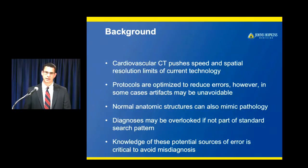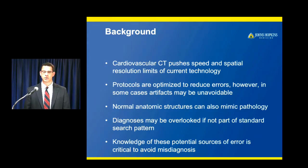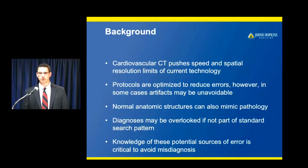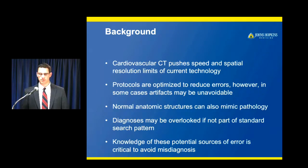We're going to review common and uncommon sources of misdiagnosis and how to avoid them. As background, cardiovascular CT really pushes the speed and spatial resolution limits of current scanner technology. We optimize our protocols to reduce errors, however in some cases artifacts are unavoidable. We're also confronted sometimes by normal anatomic structures that mimic pathology. Knowledge of all these various potential sources of error is critical to avoid misdiagnosis.